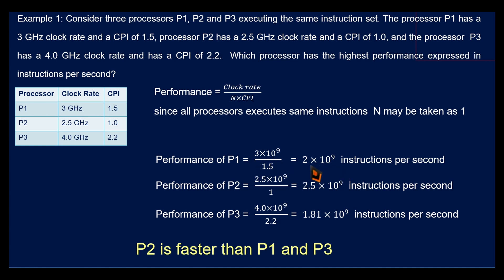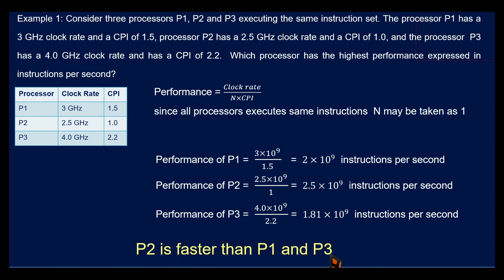So comparing the results: P1 gives 2 × 10⁹ instructions per second, P2 gives 2.5 × 10⁹, and P3 gives 1.81 × 10⁹. Processor P2 is executing the most instructions per second, so P2 is faster than P1 and P3. Therefore, the performance of P2 is the best.